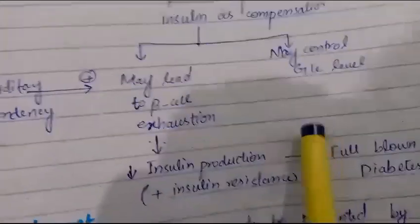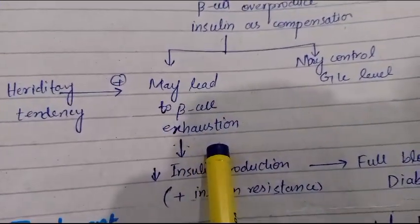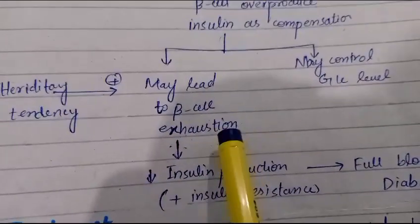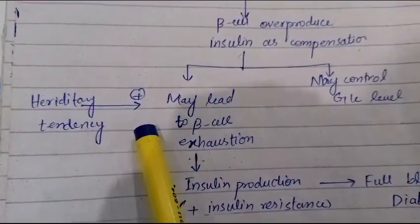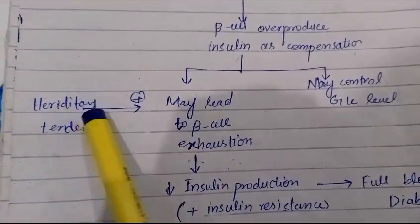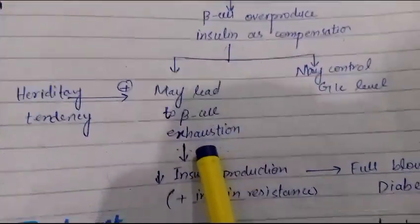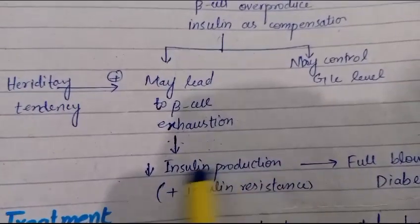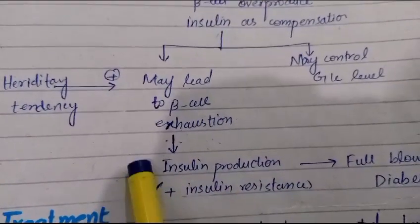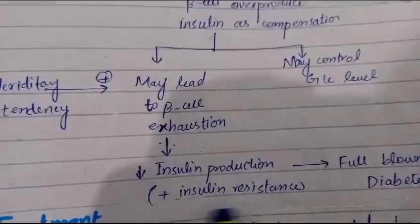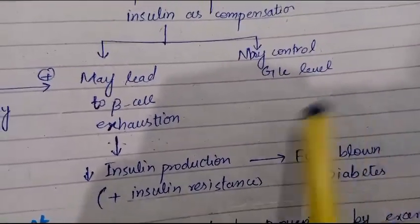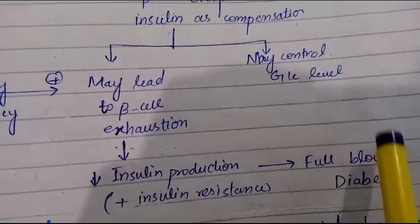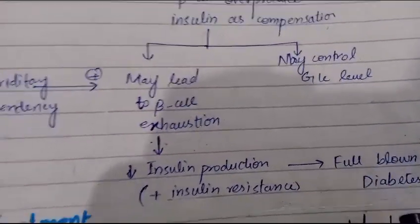Eventually, this leads to beta cell exhaustion — the beta cells get tired and can no longer maintain control. Hereditary tendency plays a very important role here, as some people have a greater tendency toward beta cell exhaustion. As a result, insulin production finally decreases. Combined with ongoing insulin resistance, these two factors lead to full-blown diabetes, with persistent hyperglycemia, proteolysis, and increased lipolysis.